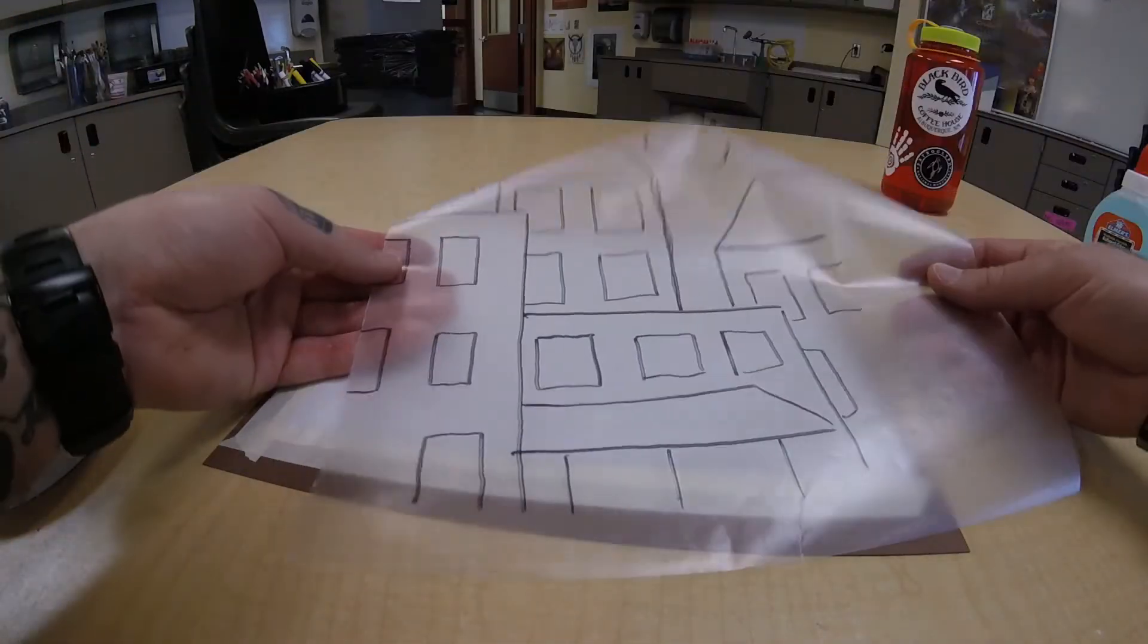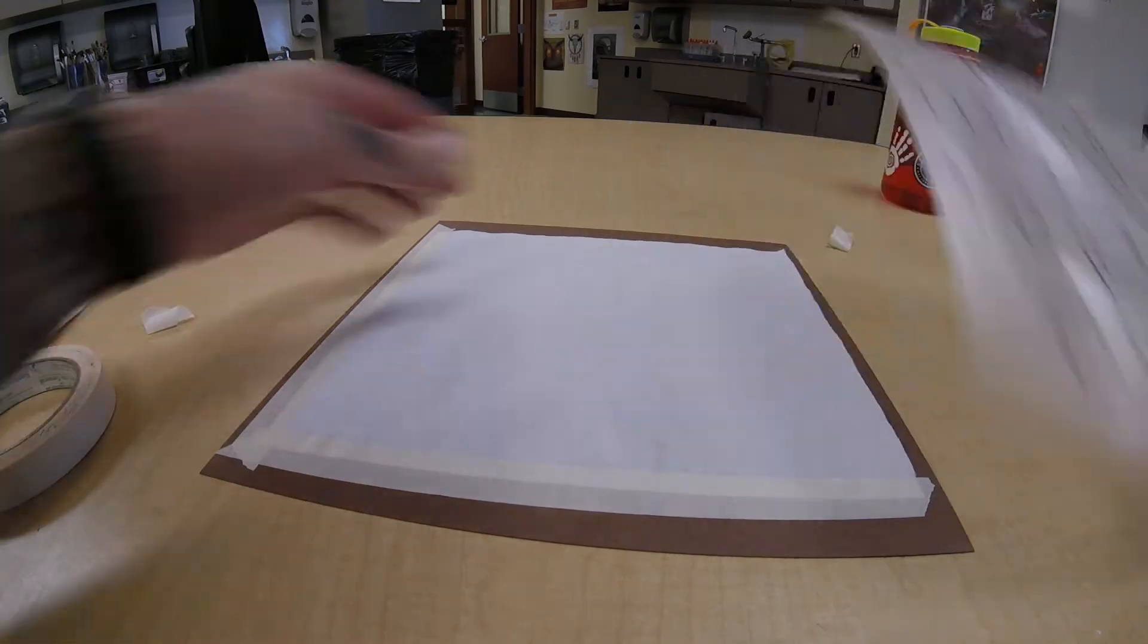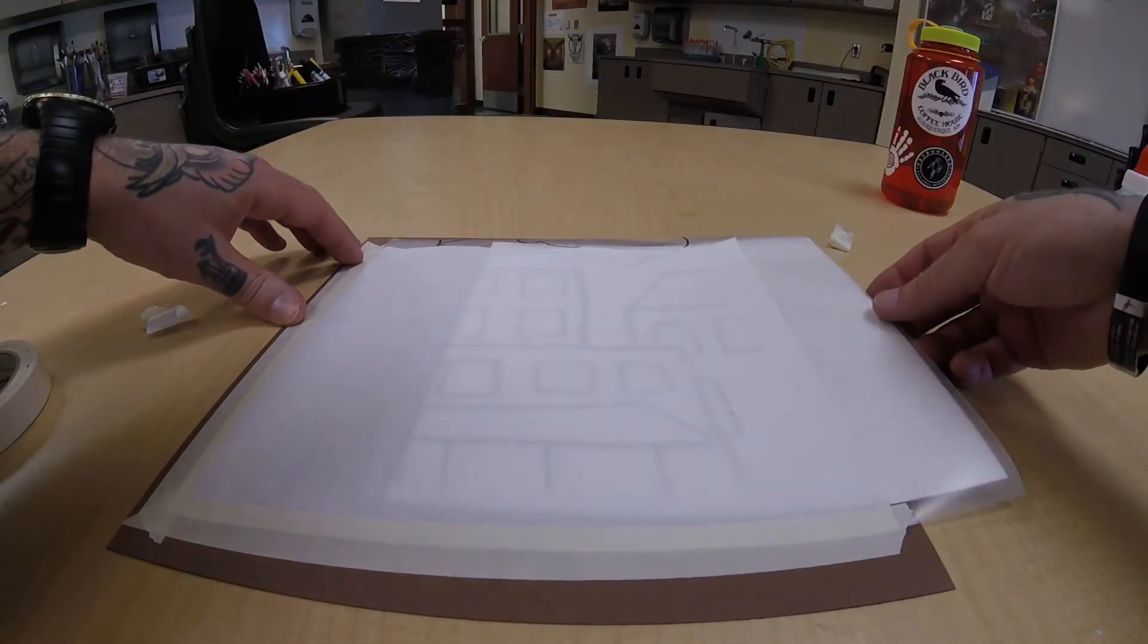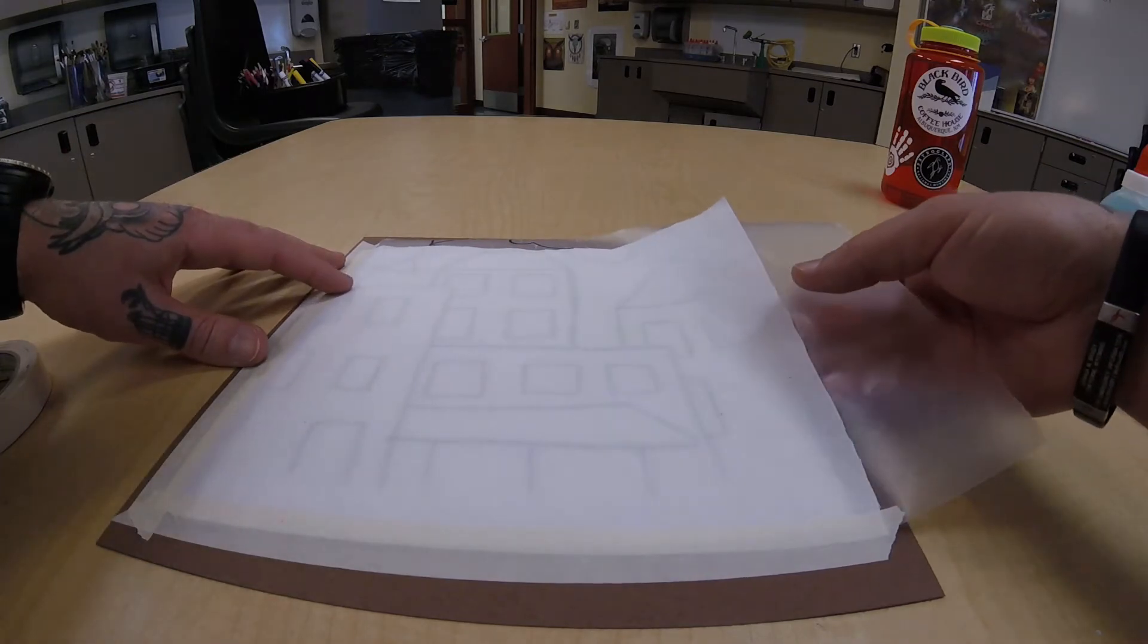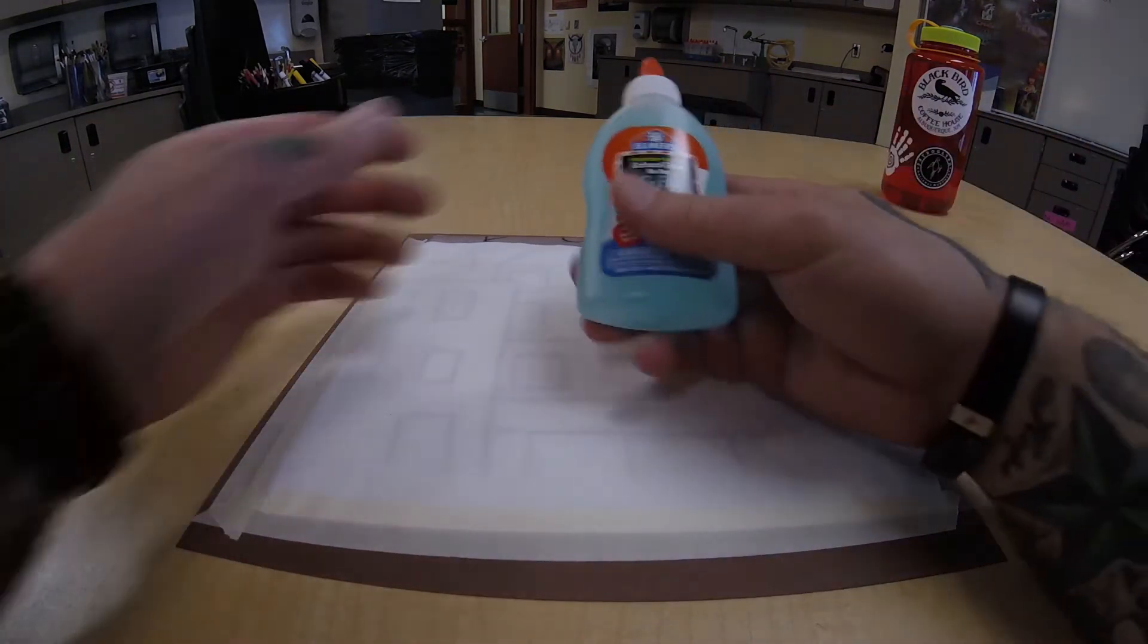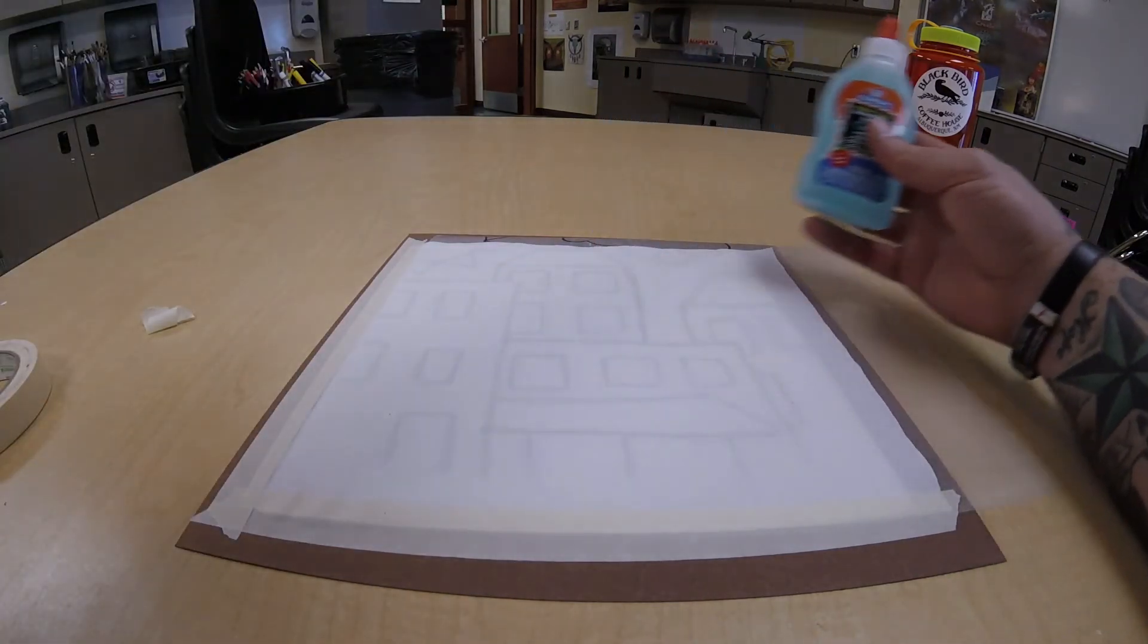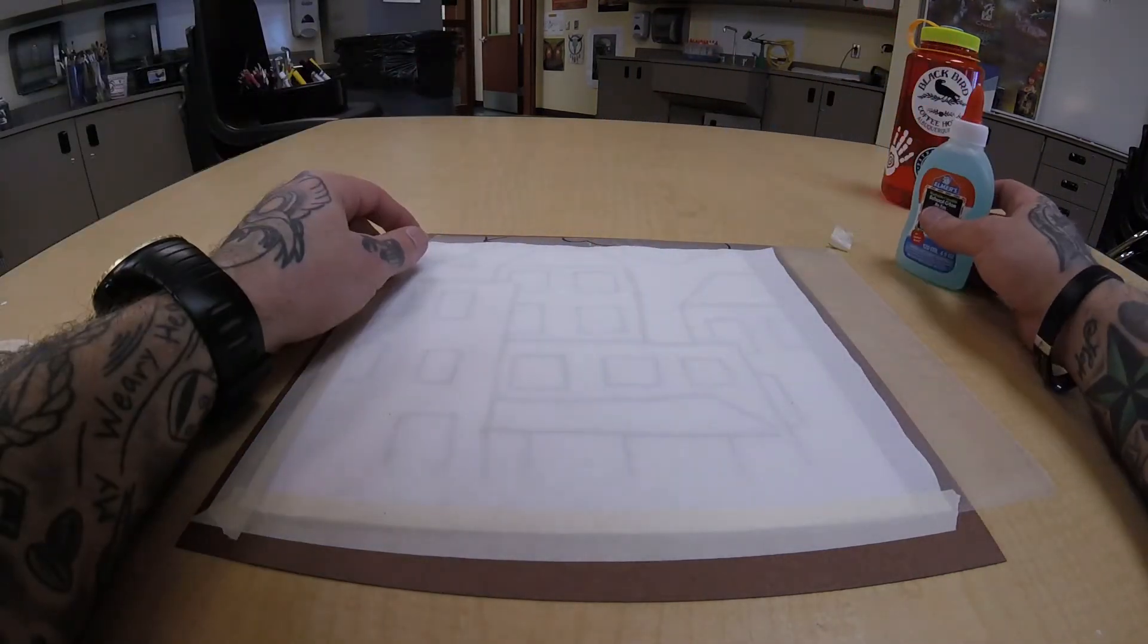And now we're going to take this piece of wax paper, and we're going to put it underneath this. We're going to take that drawing, and we're actually going to put it behind because look what's happening. Now we can see everything through again. So what we're going to have to do now is we're going to use that glue, and we're going to slowly begin tracing all of these lines that we can see through with glue.